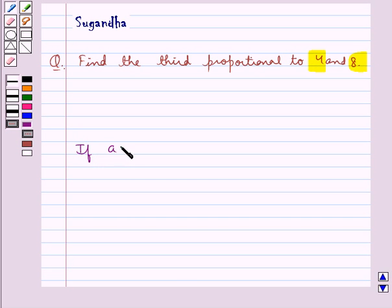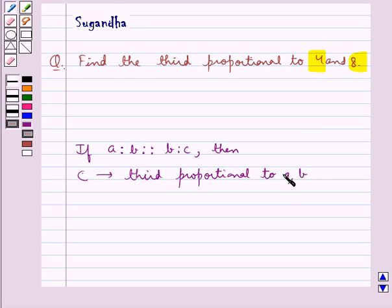If A is to B is proportional to B is to C, then C is called the third proportional to A and B.